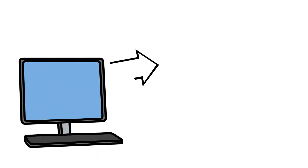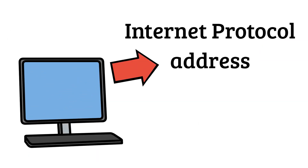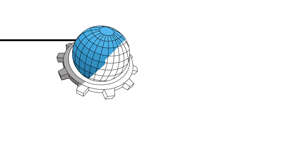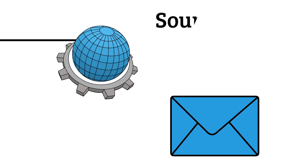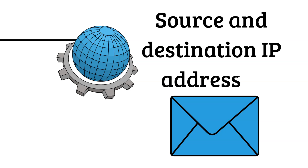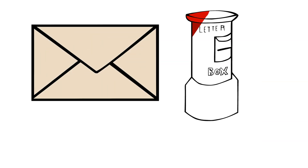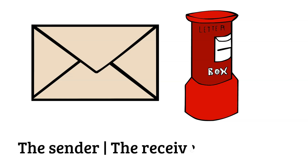Every device connected to a network has an IP, or internet protocol, address. When information is sent across the internet, it is sent in a packet with the source and destination IP addresses — just like a letter sent to a mailbox, it has the details of the sender and the receiver.